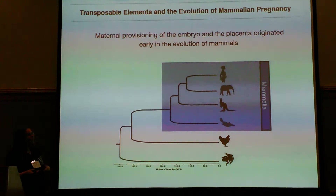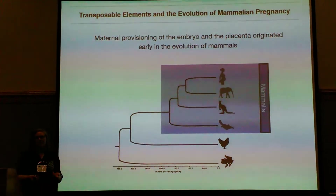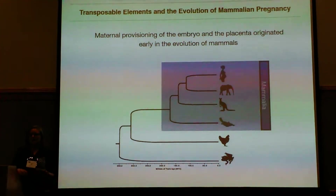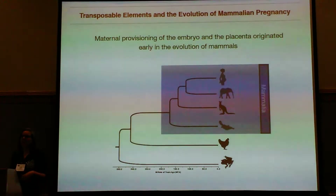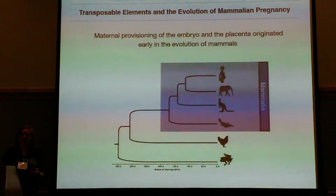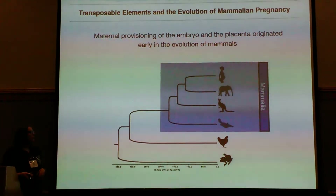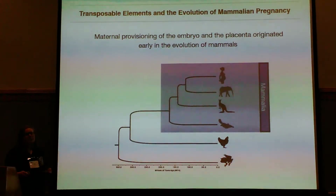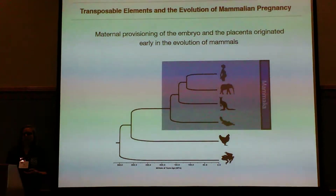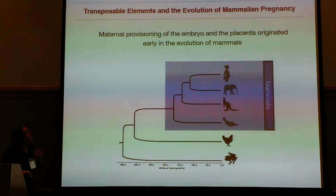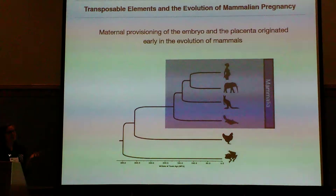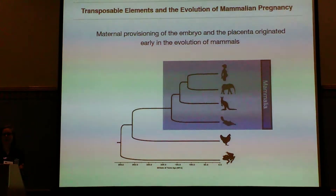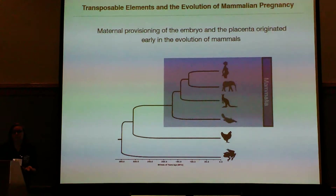A lot of the innovations involved in mammalian pregnancy seem to have evolved step-wise in terms of the evolution of mammals. All mammals, including the egg-laying mammals, have been provisioning for the embryo as well as the placenta.